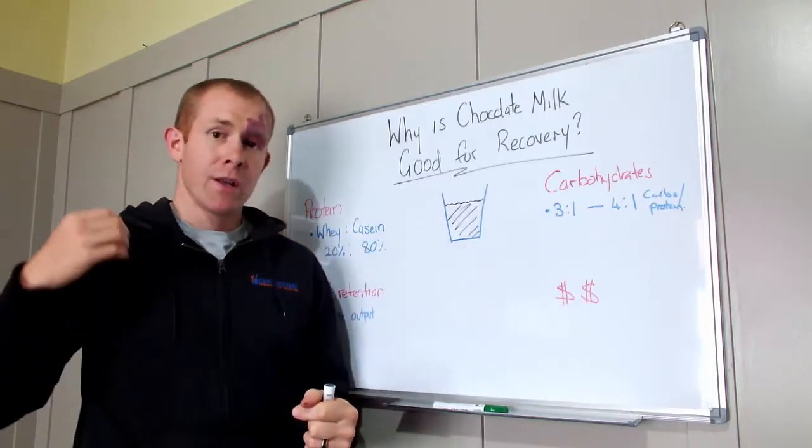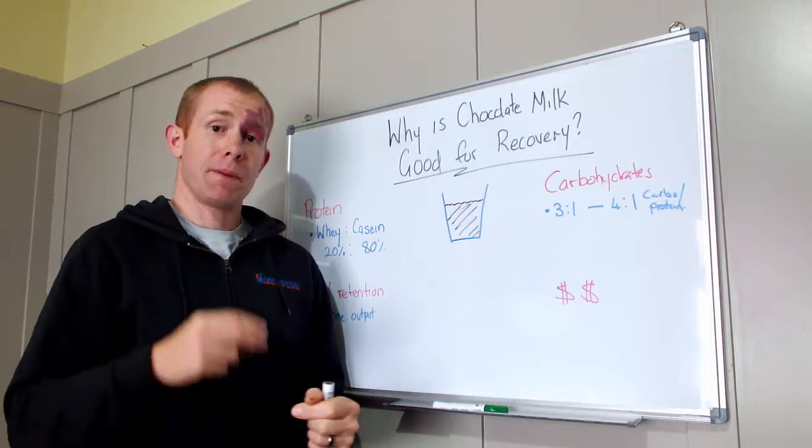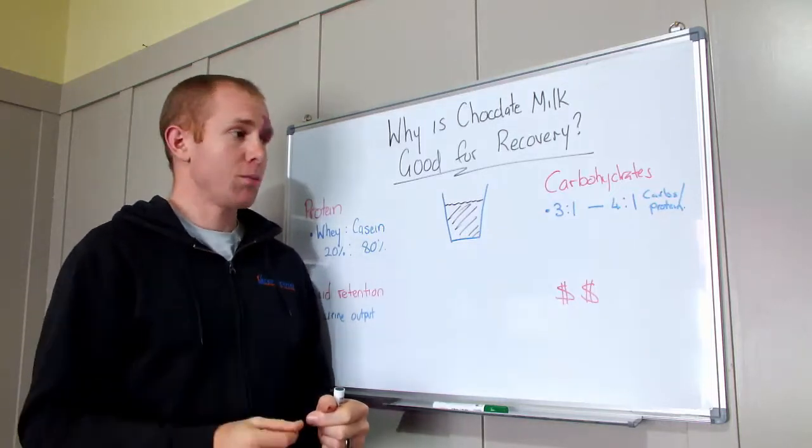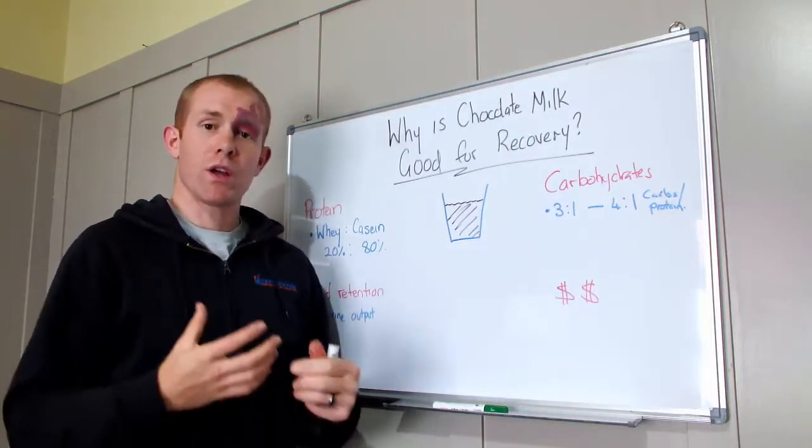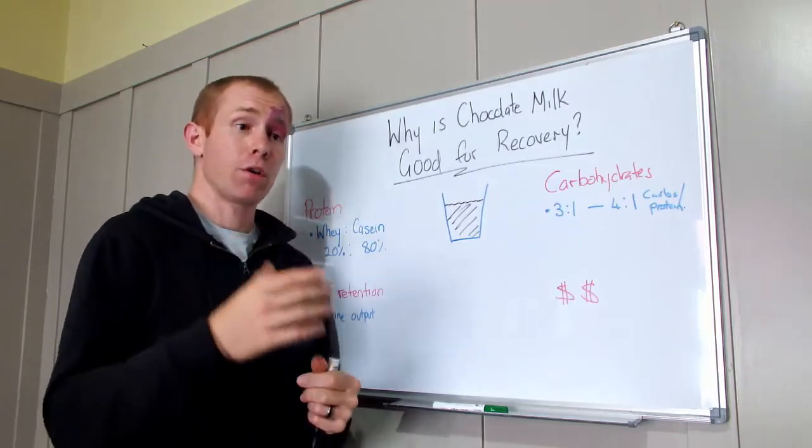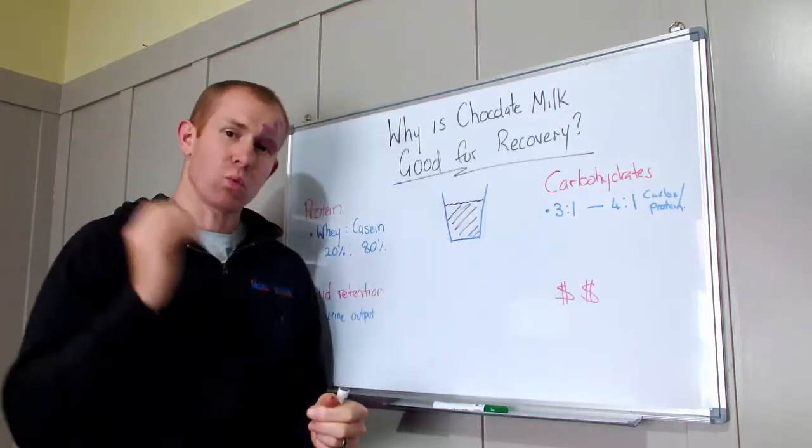Protein is going to provide amino acids to build your muscle cells, build connective tissue, new blood vessels, new blood cells, all those enzymes that are required for improved performance. Carbohydrates are going to refuel those muscles.